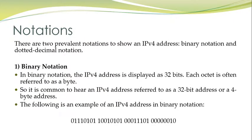There are two prevalent notations to show an IPv4 address: binary notation and dotted decimal notation. In binary notation, the IPv4 address is displayed as 32 bits. Each octet is often referred to as a byte, so it is common to hear an IPv4 address referred to as a 32-bit address or a 4-byte address. The following is an example of an IPv4 address in binary notation.